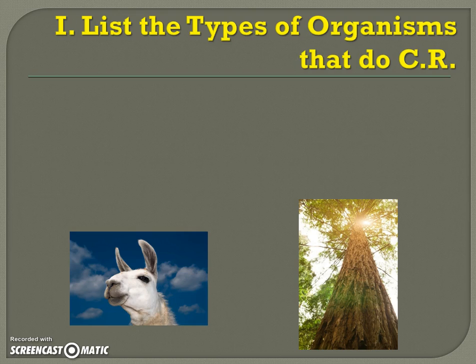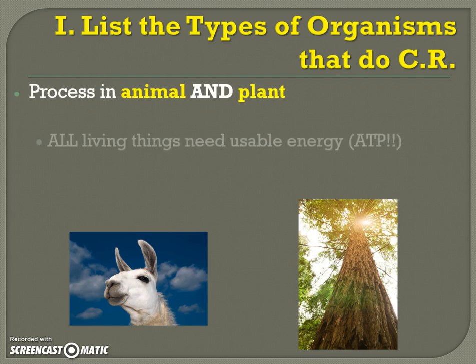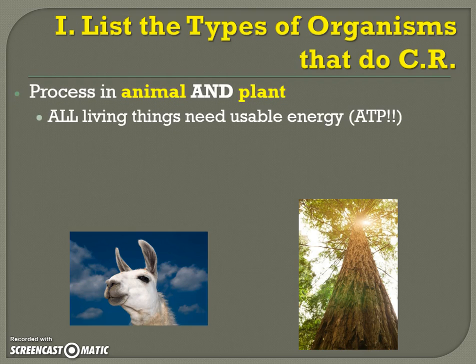So, what kind of organisms do cellular respiration, which we're going to abbreviate CR? We've talked about this before. Is it just animals that do cellular respiration? No way. Animals and plants — actually, all living things need usable energy or ATP. So it's not just animals and plants; fungi, bacteria, they all do cellular respiration. Protists too, which we rarely talk about. Everything that's alive needs to do this process.